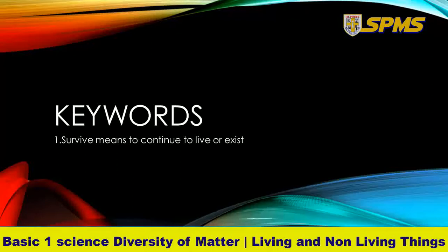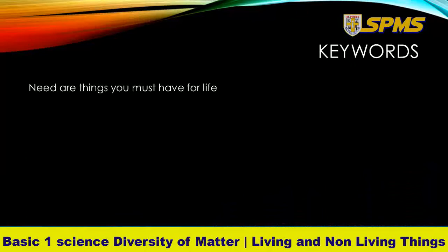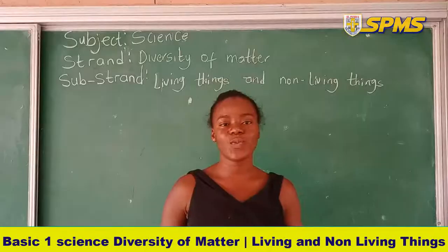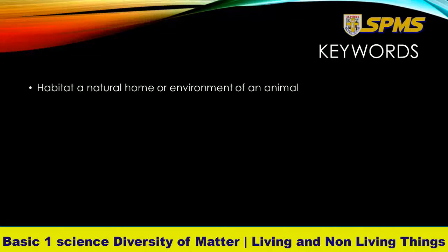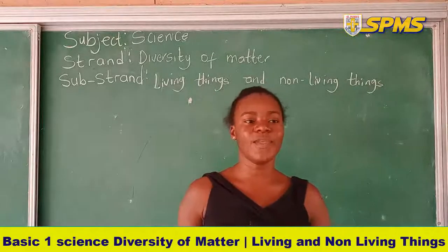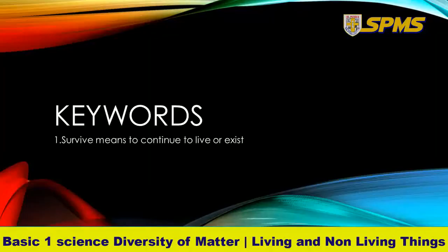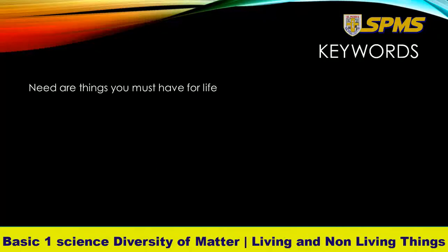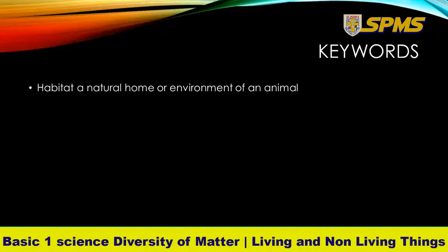Our first keyword is 'survive' — to continue to live or exist. The next one is 'need' — the things you must have for life. And the last one is 'habitat' — a natural home or environment where animals, living things, and organisms live.